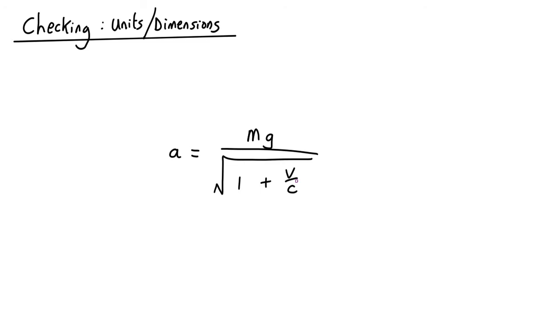Well, let's look at the units. Acceleration, that's meters per second squared, so that's meters over seconds squared. On the other side, mass is kilograms, g is meters per second squared.